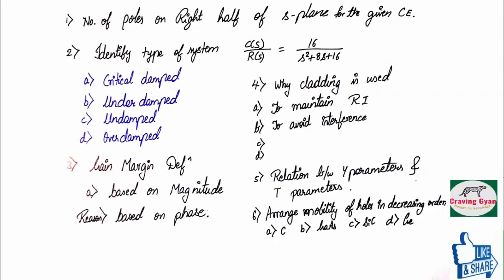Starting with first question, they have asked number of poles that is residing on right top of S plane. They have given the characteristic equation you have to solve. The second question was based on, you have to identify the type of system given the transfer function C of S divided by R of S which is equal to 16 divided by S square plus 8S plus 16.